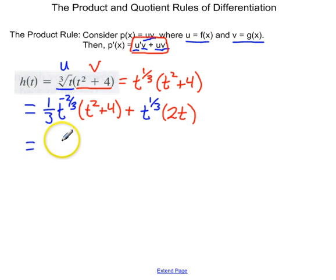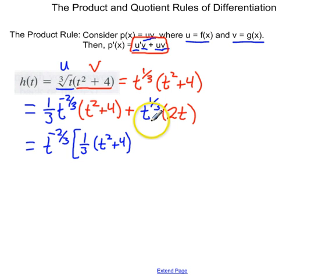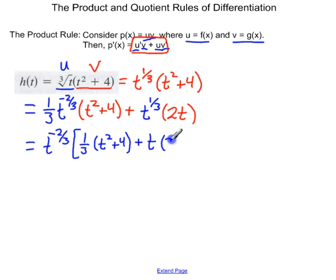So if I factor out a t to the negative 2 thirds, that's going to leave me with 1 third times t squared plus 4. And if I factor out t to the negative 2 thirds, that's t to the 1 third divided by t to the negative 2 thirds, and when I subtract 1 third minus negative 2 thirds, I'm going to get t to the 3 thirds, which is just t.